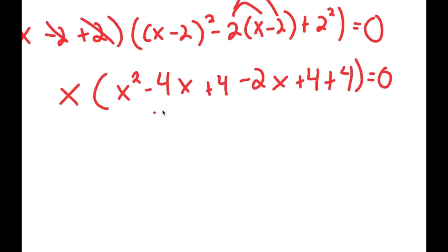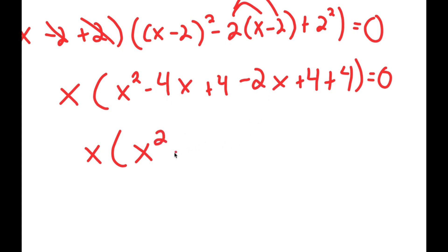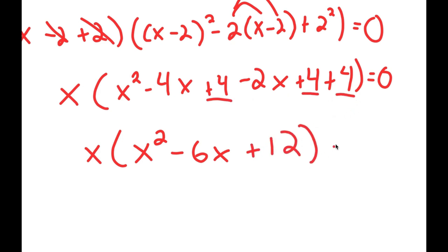From here, we can simplify what's in the parentheses. So I get x times x squared minus 4x plus 4 minus 2x plus 4 plus 4. This simplifies to x squared. Negative 4x minus 2x is negative 6x. And I'm left with plus 4 plus 4 plus 4, which is plus 12. This is equal to 0.